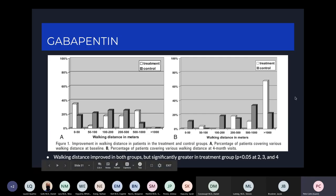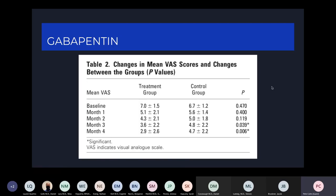The treatment group showed a very large improvement in walking distances at the four-month period, which was significant compared to the control group. Walking distance improvement was greater at two, three, and four months, but greatest at four months. VAS pain scores also showed significantly greater improvement in the treatment group at three and four months compared to the control group. Gabapentin did seem to be helpful, particularly when taken over that three-month period.